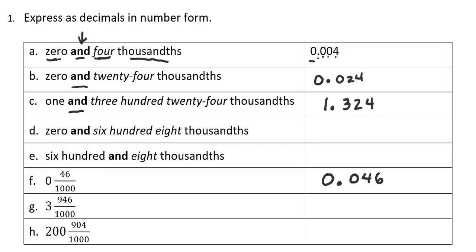If I skip down to question H, I have two hundred for my whole numbers. So that's going to be two hundred and, for my decimal point, nine hundred four thousandths. I would just write those three digits because that puts the four in the thousandths place. So two hundred and nine hundred four thousandths.